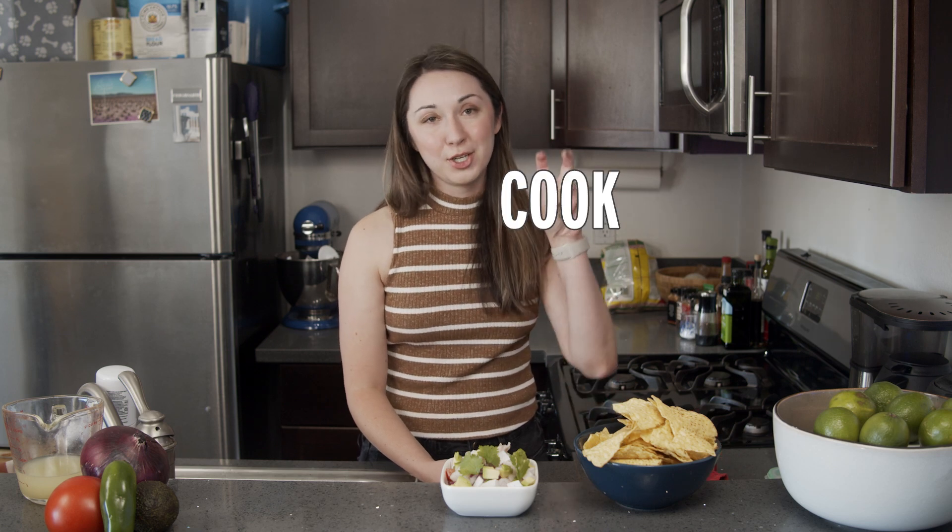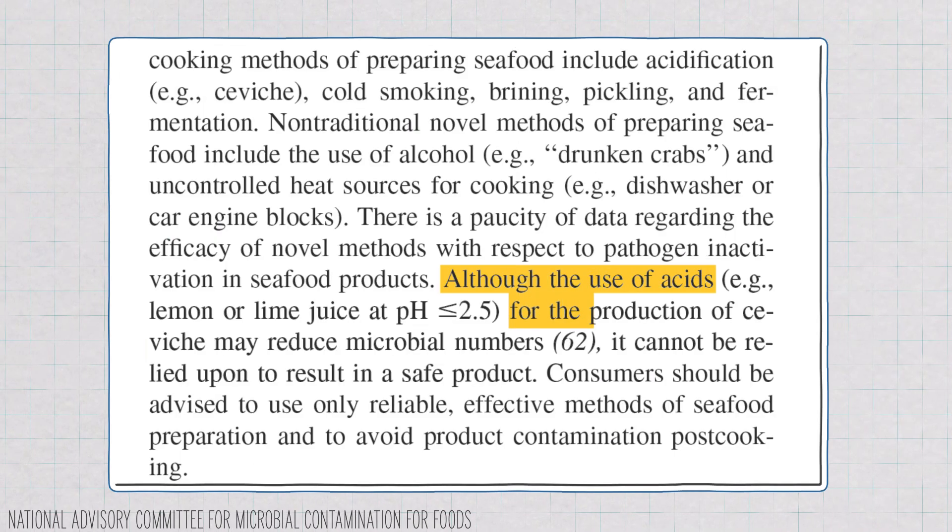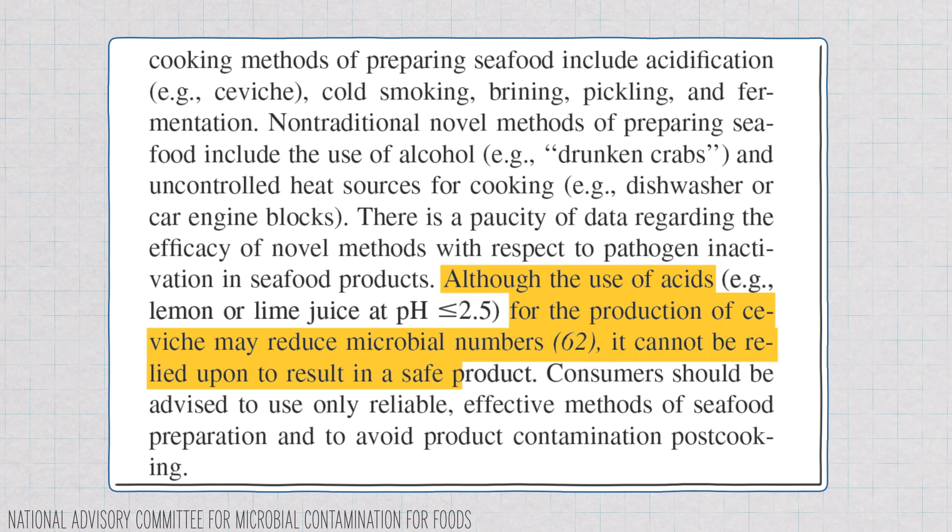So are these methods safe ways to cook food? A 2008 statement from the National Advisory Committee for Microbial Contamination for Foods said that although the use of acids for the production of ceviche may reduce microbial numbers, it cannot be relied upon to result in a safe product. But as someone with a pretty tough stomach and a good immune system, I'm still going to keep eating ceviche, sushi, and the occasional oyster, even though I know they all come with risks. And as for the semantic question — is ceviche cooked? Did you really think I was going to answer that? This is a chemistry channel; that is a semantic question.